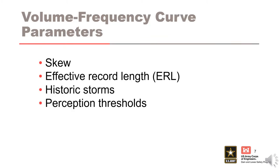Effective record length and the skew parameter are probably the two most important inputs for the volume frequency curve. Skew affects the tail of the distribution at rare annual exceedance probabilities, and effective record length affects the mean hazard curve. Since these inputs also tend to be uncertain, it is good practice to evaluate the sensitivity of the results to these inputs.